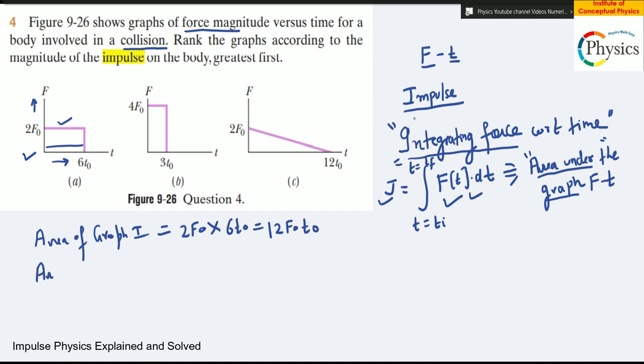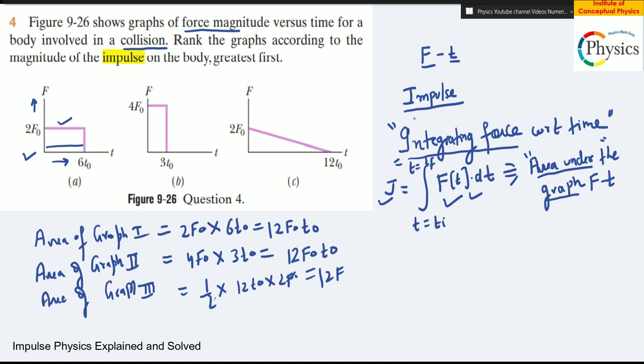Let's talk about the area of graph two: 4F₀ multiplied by 3t₀ equals 12F₀t₀. The area of graph three: half base, ½ into height 2F₀, equals 12F₀t₀.